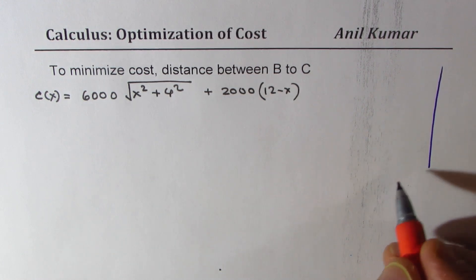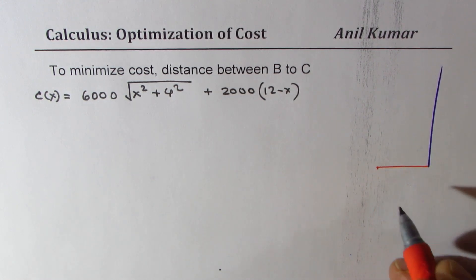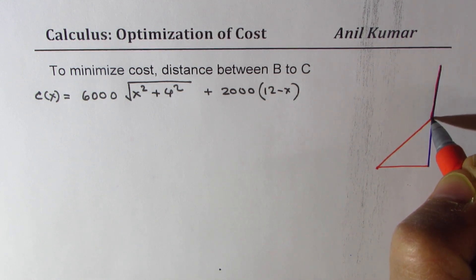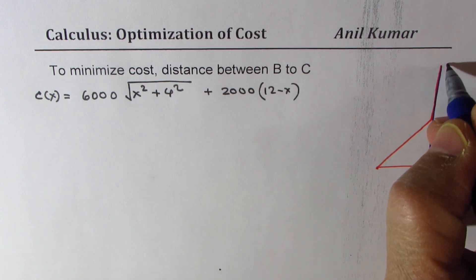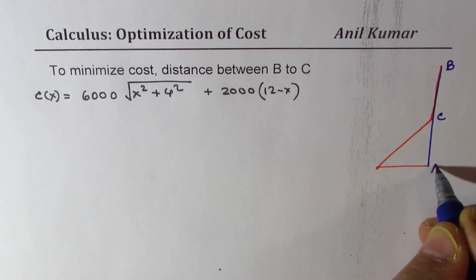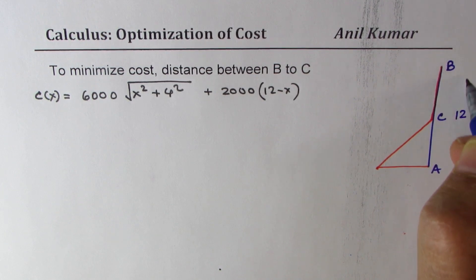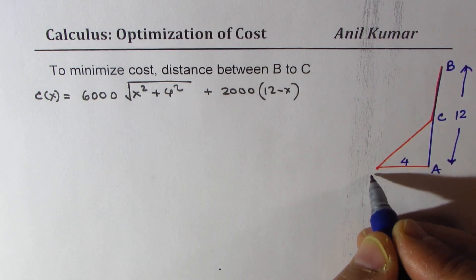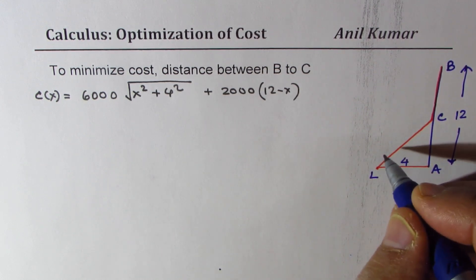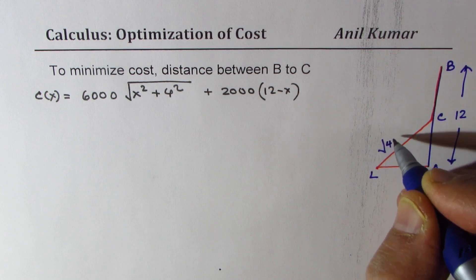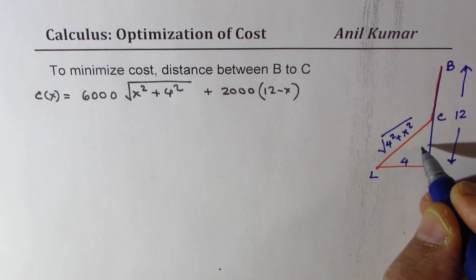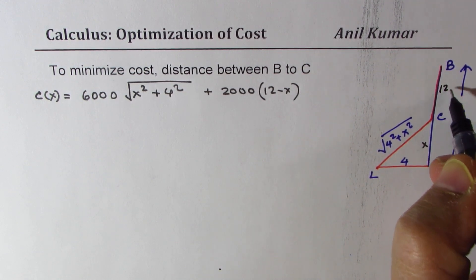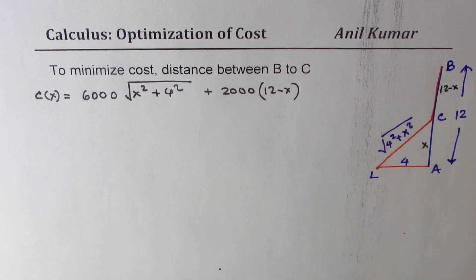From here, we have a lighthouse, we are trying to go like this, and then to the source of power. This source of power is at B, we land at C, and from A, this distance is 12, this distance is given to us as 4 towards the lighthouse, and this here will be square root of 4 square plus x square, where this is x, and that is 12 minus x from B to C.